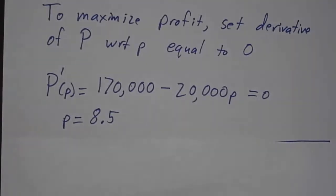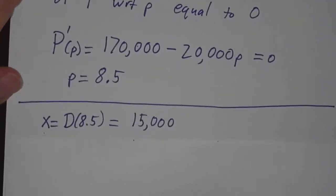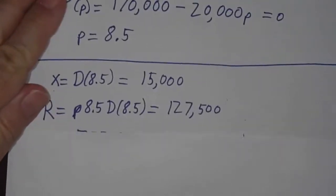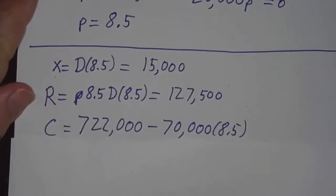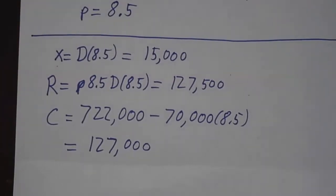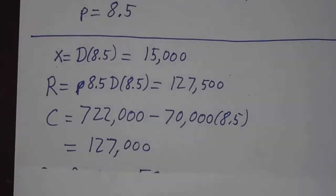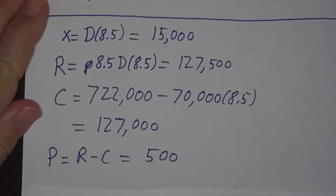So the right price to charge is $8.50 for widgets. And then if you look at the demand function, $8.50 per widget means that there will be 15,000 orders. So it really is the same situation we had before, only everything was described in terms of price instead of in terms of numbers. The revenue is 8.5 times the demand at 8.5. Revenue is 127,500. The cost winds up being 127,000. The difference is 500. And your profit is 500.